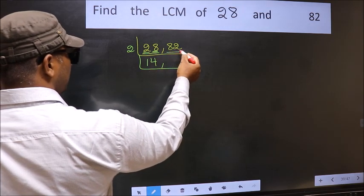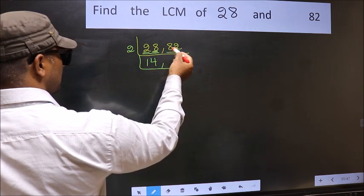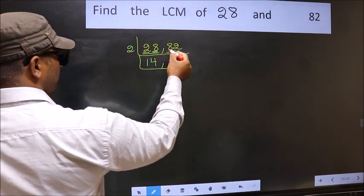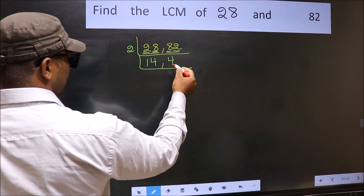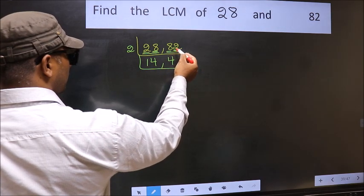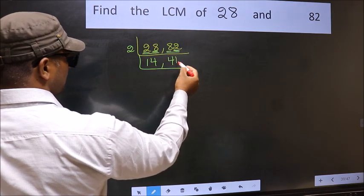Now the other number 82. Last digit 2, even. So this is divisible by 2. First number 8. When do we get 8 in 2 table? 2 times 4 is 8. The other number 2. When do we get 2 in 2 table? 2 times 1 is 2.